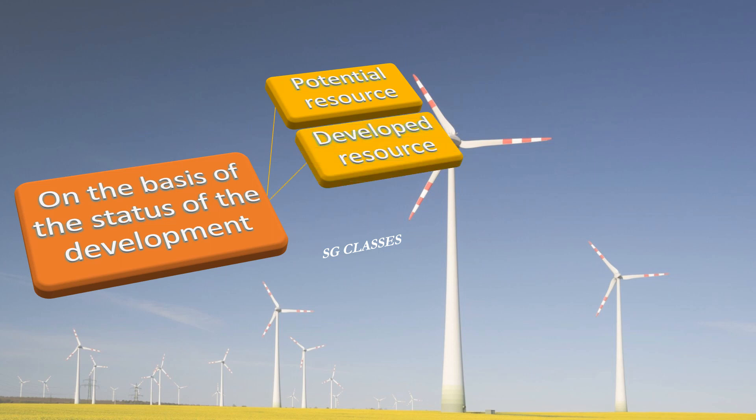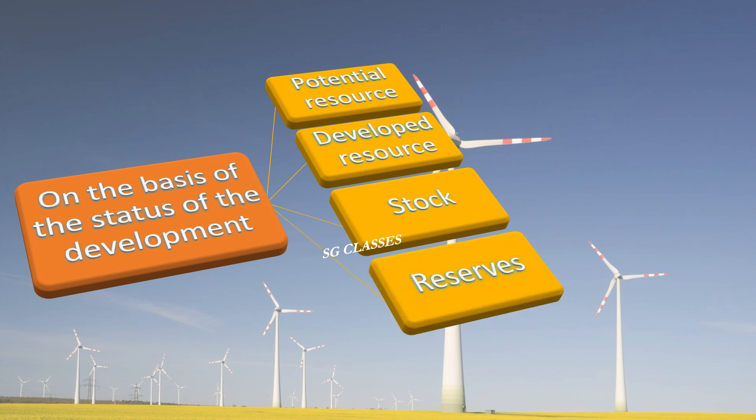Developed resources are those which have been surveyed and whose quality and quantity have been determined for utilization. The development of resources depends on technology and level of feasibility. Stock resources are materials in the environment which have the potential to satisfy human needs but humans do not have the appropriate technology to access them — for example, hydrogen as a source of energy.